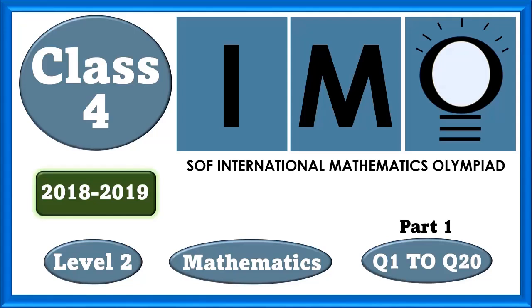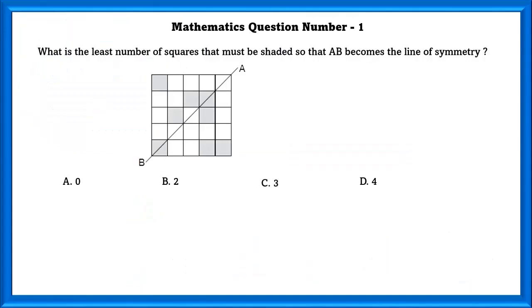Class 4 IMO Level 2 Mathematics, question number 1. What is the least number of squares that must be shaded so that AB becomes a line of symmetry?